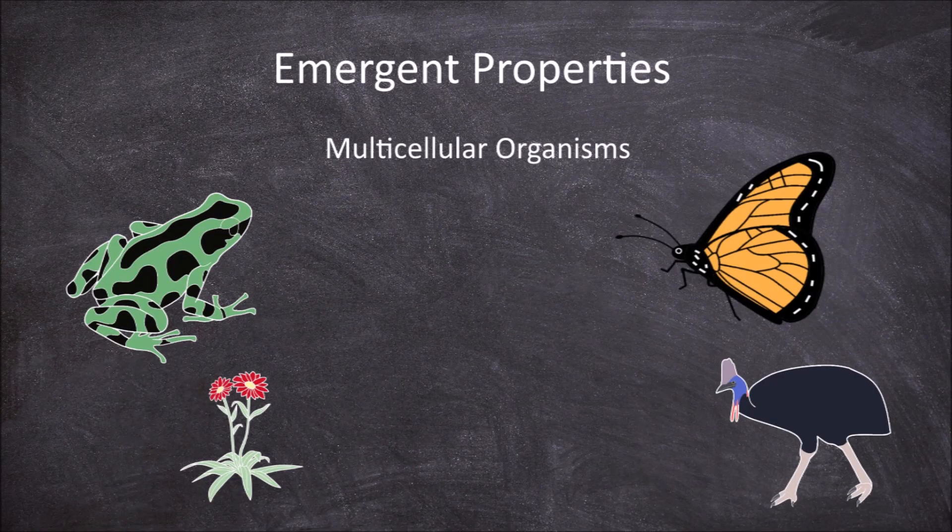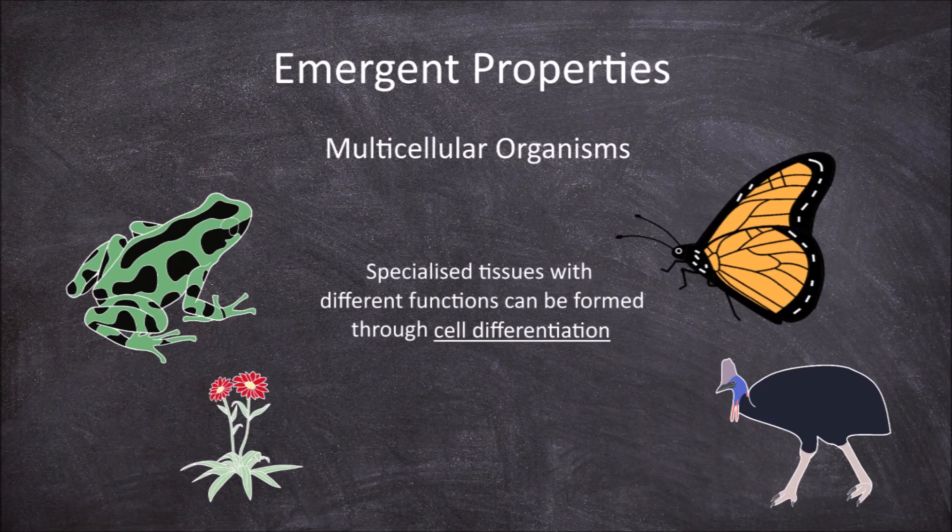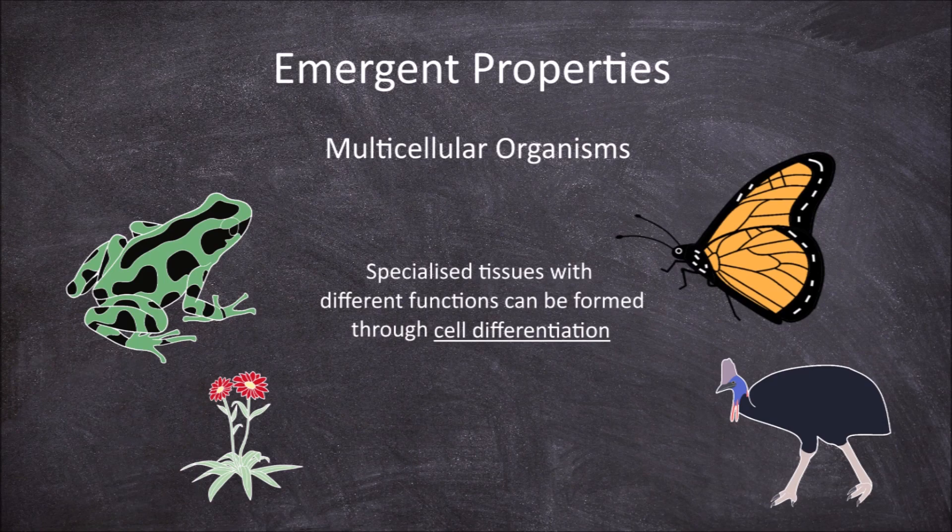In multicellular organisms, specialized tissues with different functions can be formed through cell differentiation. These are called emergent properties.